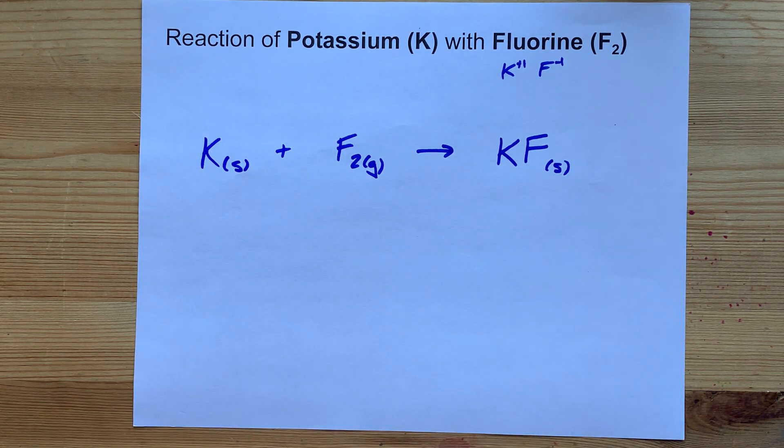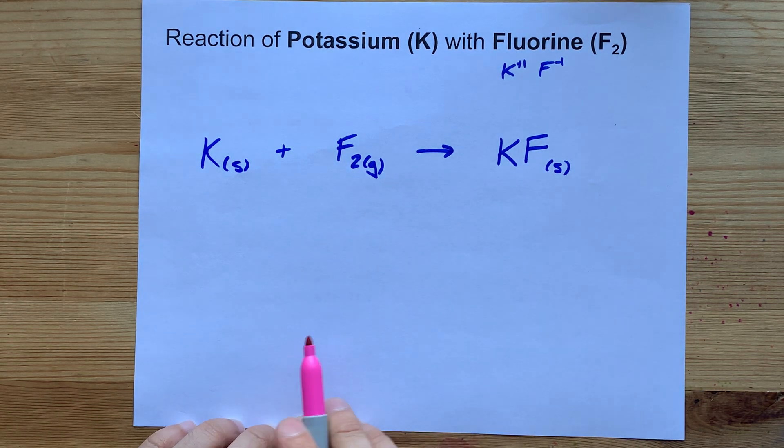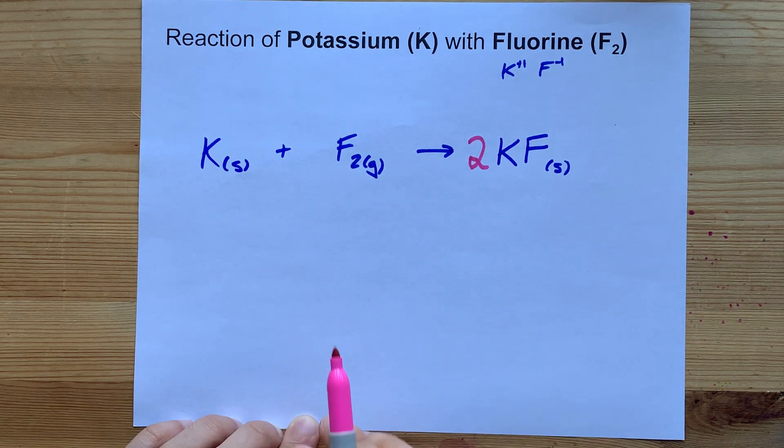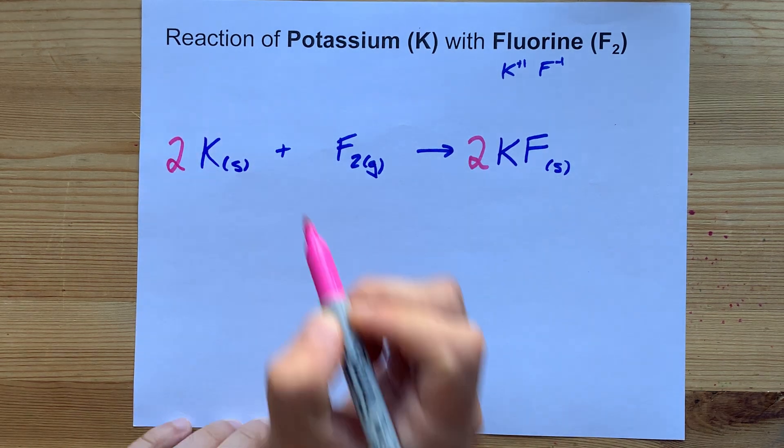If you're asked to balance it, you'll need to note that there are two fluorines on the left side of your arrow here, so you'll need two fluorines here. You're only allowed to change the coefficient, and likewise you're going to need two potassiums here.